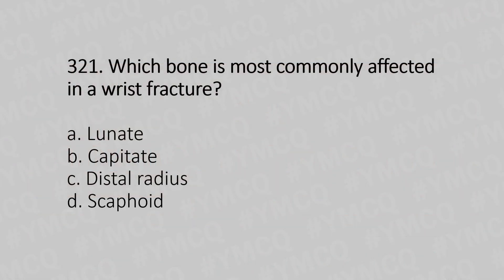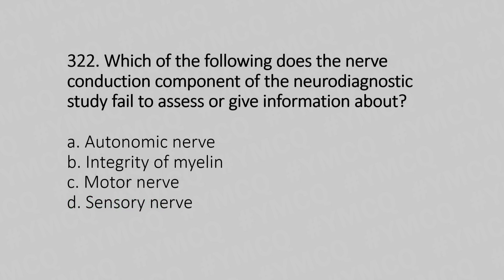Question number 321: Which bone is most commonly affected in a wrist fracture? Option A: lunate. Option B: capitate. Option C: distal radius. Option D: scaphoid. The answer is option D, scaphoid.